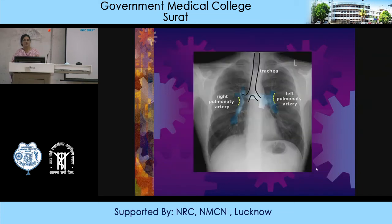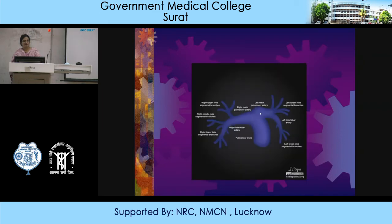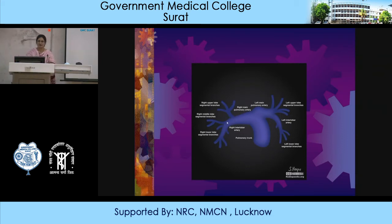You can see the bifurcation of the pulmonary artery into left and right pulmonary arteries. The left pulmonary artery gives rise to left upper lobe segmental branches, left interlobar artery, and left lower lobe segmental branches. The left pulmonary artery is higher. The right pulmonary artery leads to right upper lobe segmental branches, the right interlobar artery, right middle lobe segmental branches, and right lower lobe segmental branches.